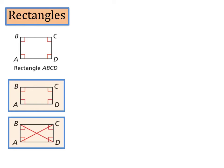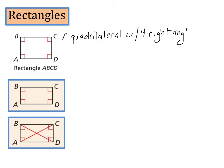Rectangles are special types of quadrilaterals. Specifically, the definition of a rectangle is a quadrilateral with four right angles. This is the definition of a rectangle.